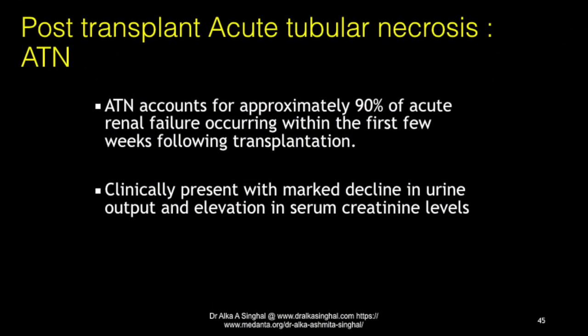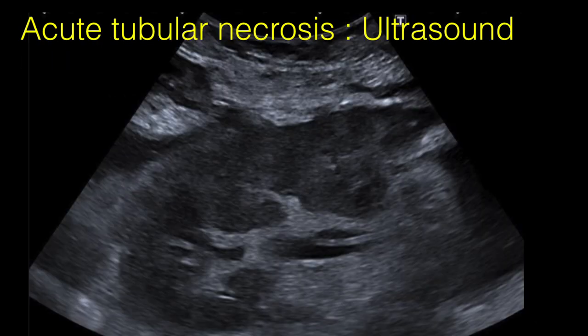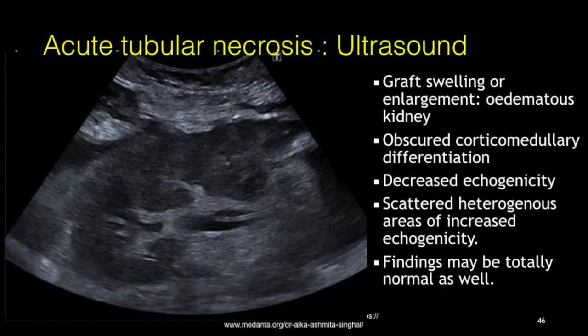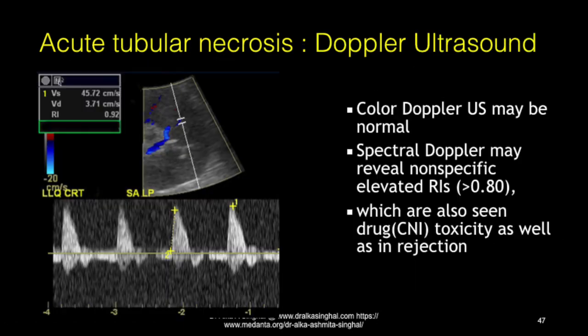Post-transplant acute tubular necrosis accounts for the majority of cases of renal failure occurring within the first few weeks of transplant. Clinically, it presents with decreased urinary output and elevated creatinine levels. On ultrasound, there is graft enlargement and swelling, the kidney is edematous, and there is obscured corticomedullary differentiation. The kidney is usually hyperechoic, though scattered areas of increased patchy echogenicity may also be seen. At times the kidney may appear completely normal. On spectral Doppler, again, the finding is non-specific elevation of RI.